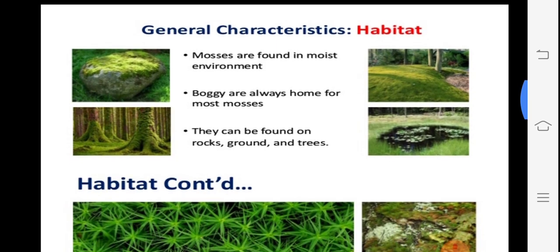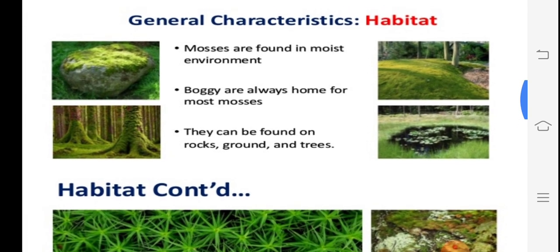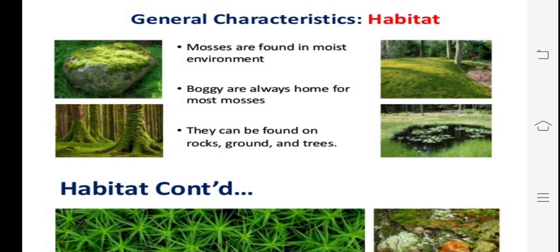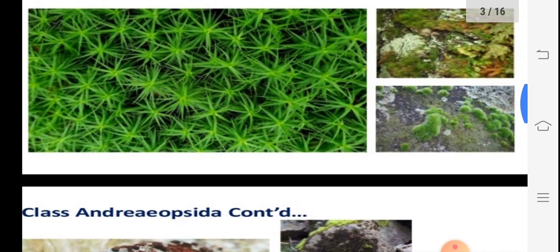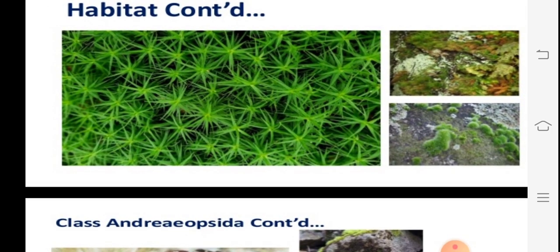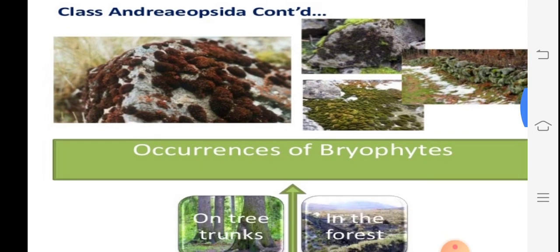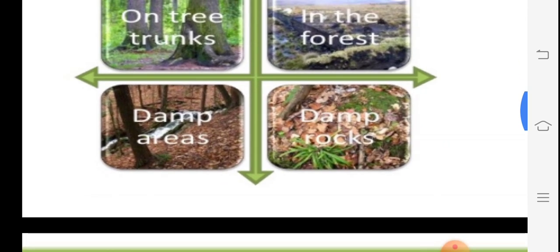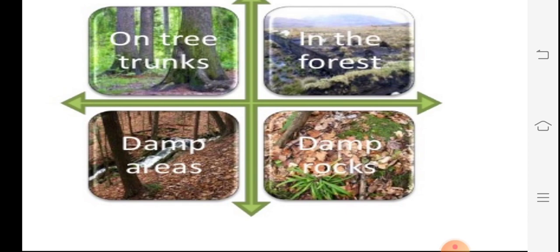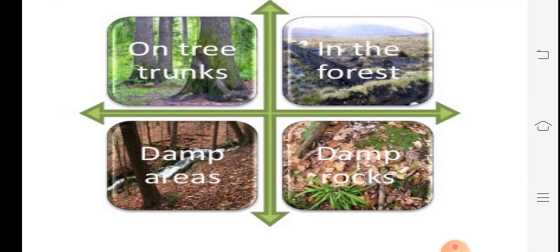We know their environmental conditions — some are generally found in moist environments. Photographs have been provided showing these conditions. They can also be found on different positions: rocks, ground, or trees. This is a good photograph of mosses like Sphagnum and Bryum — very small but with well-developed reproductive stages. Bryophytic species occur in forest areas, damp areas, and on tree trunks.